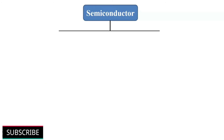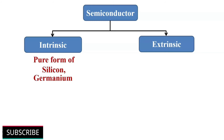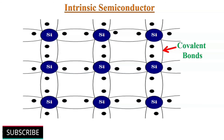Semiconductors can be classified into two types: intrinsic semiconductors and extrinsic semiconductors. An intrinsic semiconductor is an extremely pure form of semiconductor made up of only a single type of element. For example, in a silicon crystal that is an intrinsic semiconductor, all the atoms would be silicon only.